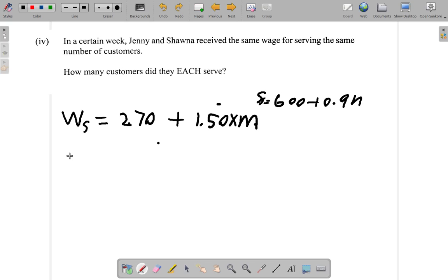So let's call the wage W. W for Jenny is 600 plus 0.9N. For Shawna, it's W too because I say it's the same wage. So I call both of them the same letter W, and that's 270 plus 1.5N.